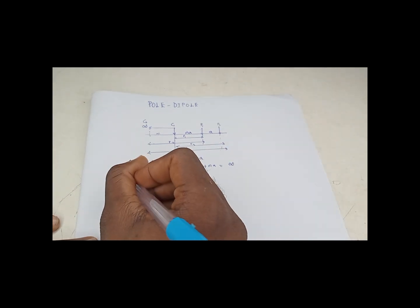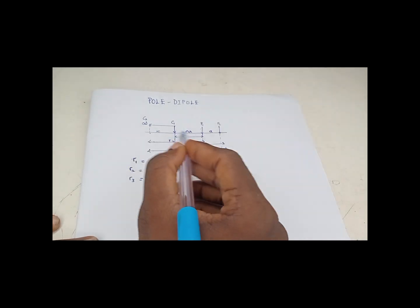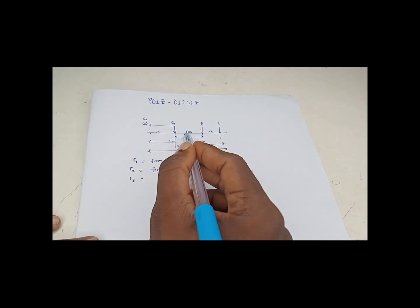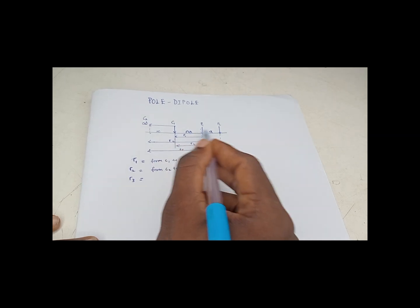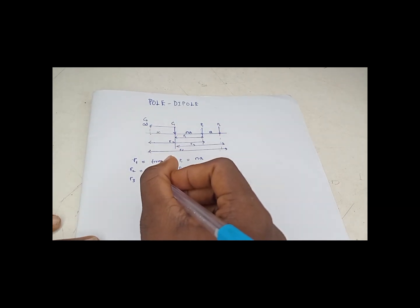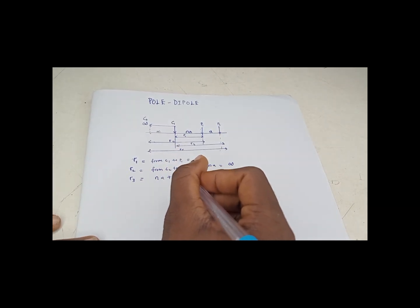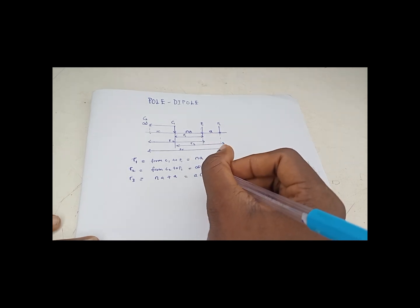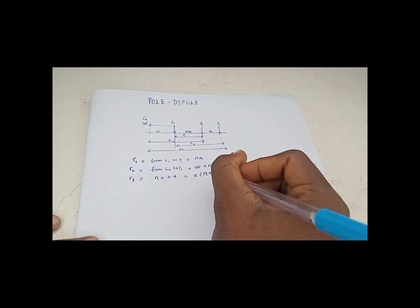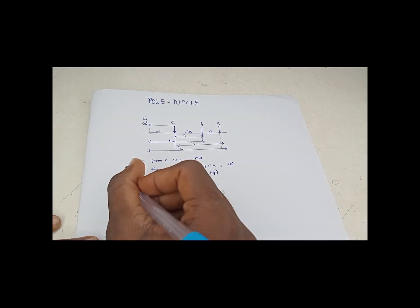So R3 is C1 towards P2. Can you see? C1 to P2, we cover N times A plus A. So that will give us N times A plus A, and that's A open bracket (N plus 1).